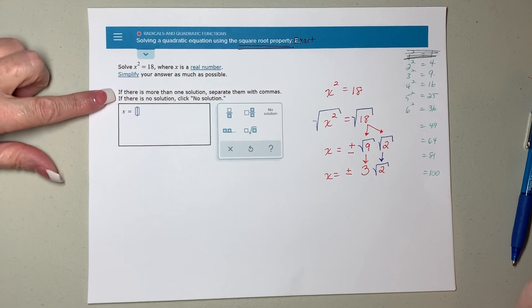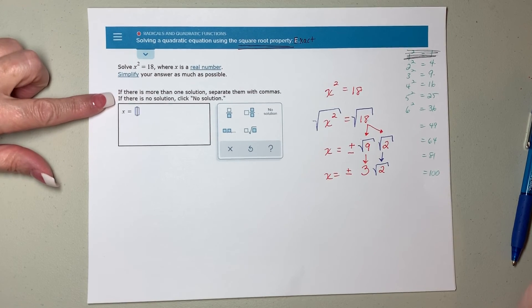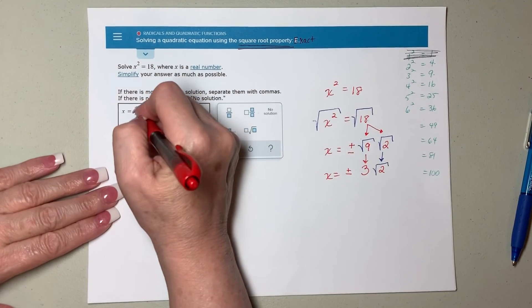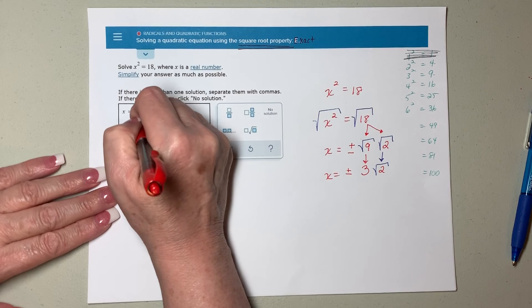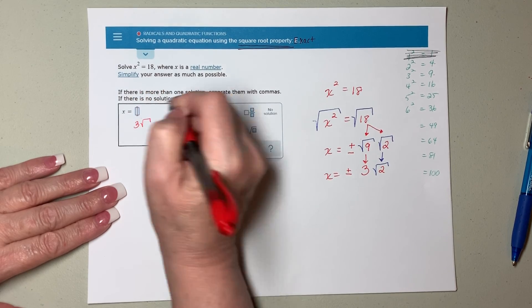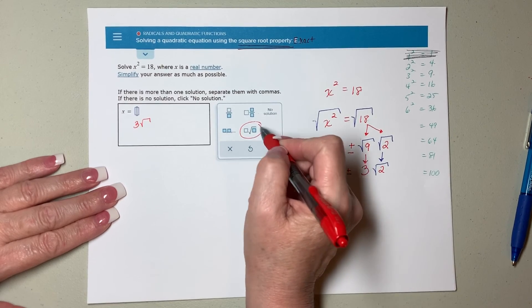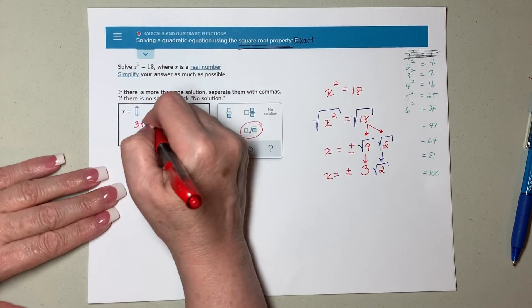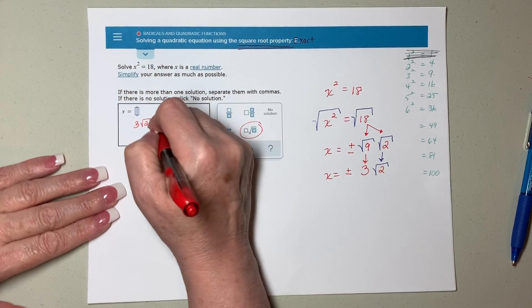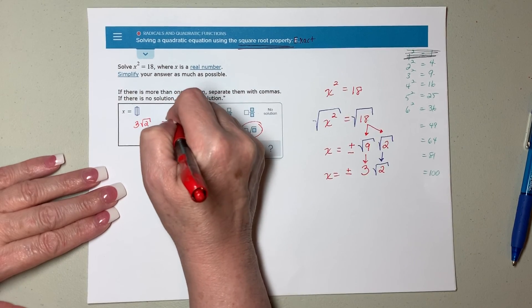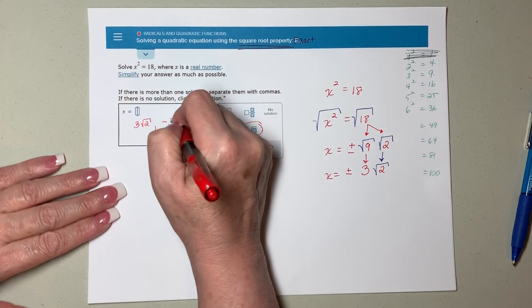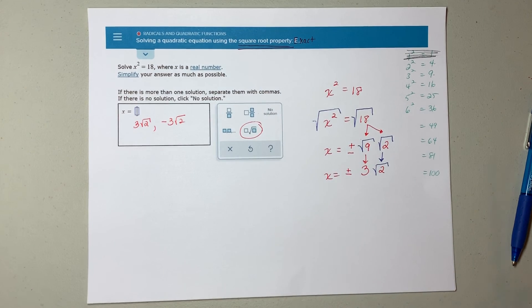Now for Alex, it says if there's more than one solution, separate them by commas. So in this box, I'll have to type three, I'll have to hit this little tool in your toolbox here, and type in a two, then put comma, then negative three, hit that again, and the square root of two. And those are my answers.